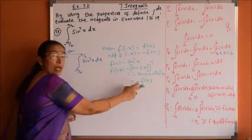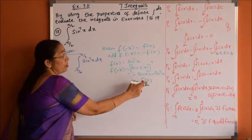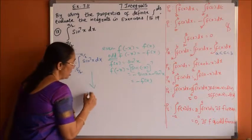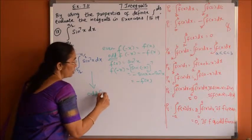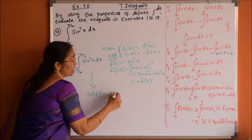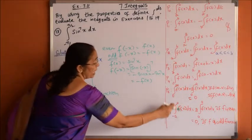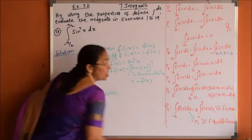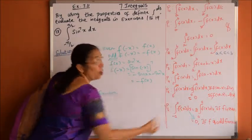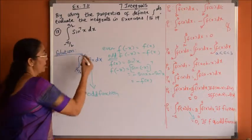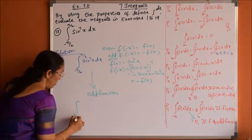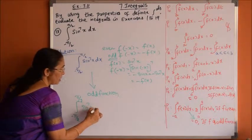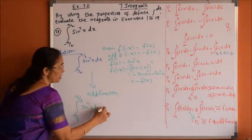We got f of minus x equals minus f of x, therefore the given function is an odd function. The integral of an odd function from minus a to plus a equals 0. Therefore the given integral from minus pi by 2 to plus pi by 2 of sin power 7x dx is zero.